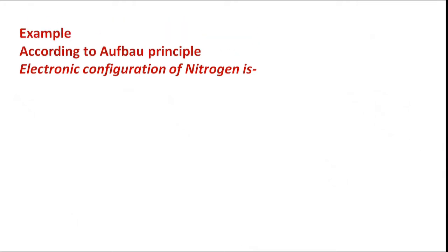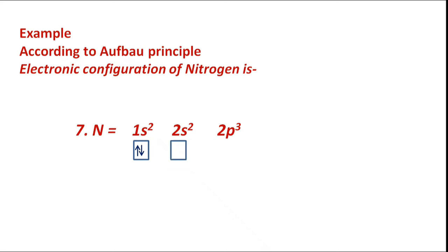Example: according to the Aufbau principle, the electronic configuration of nitrogen is 1s2 2s2 2p3. Filling of electrons in 1s takes place first singly, and then by pairing with electrons of opposite spin. After that, electrons fill 2s singly and then pair by opposite spin. By the same way, electrons fill the 2p sub-level singly, giving that electronic configuration.